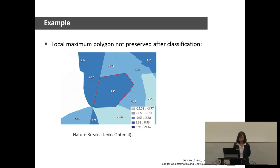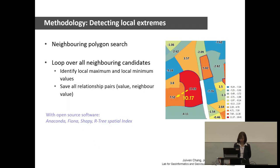Here is a zoom-in example of how local extrema values were not preserved. A central value of 1.83, which is a local maximum, was categorized into the same class as one of its neighbors with a value of 0.27. The class breaks placement determines the result shown on the map.